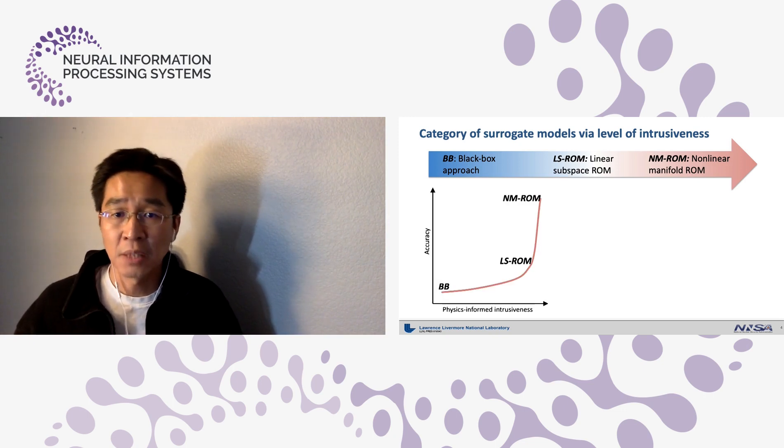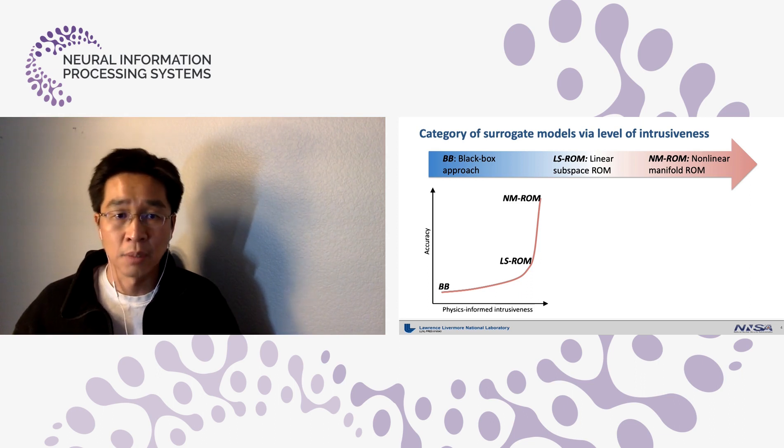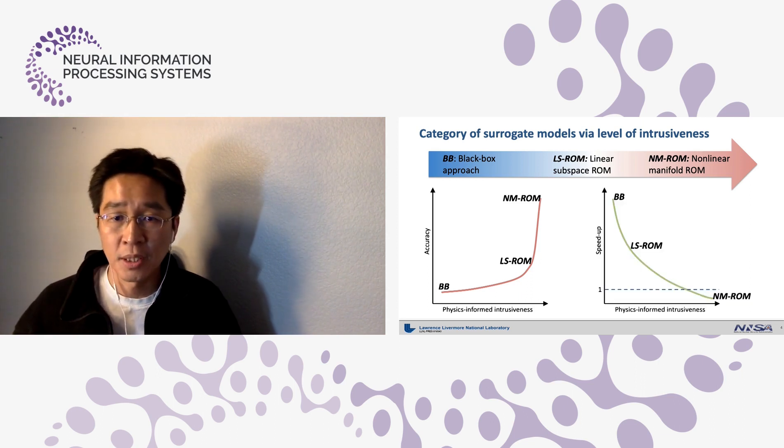So ROMs are more accurate than the black box approach. On the other hand, more intrusiveness means less speed-up. So the BB method is faster than ROMs in general. We are particularly interested in the most accurate surrogate model, that is NMROM. Unfortunately, the NMROM is currently slower than the full-order model, which is not practical.